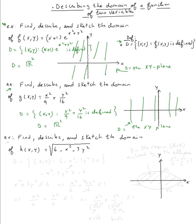Next example: find, describe, and sketch the domain of h(x, y) equal to the square root of (6 - x² - 3y²). The domain will be the set of all (x, y)'s. For the radical to exist or to be defined, you want whatever is under the radical to be greater than or equal to zero.